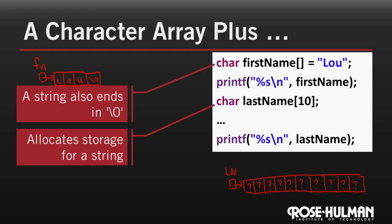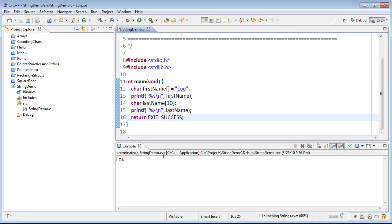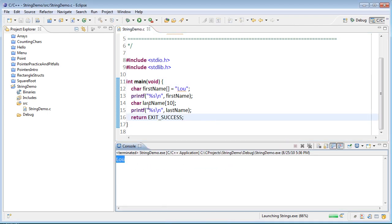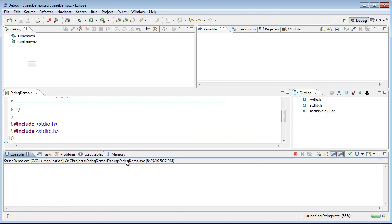Let's look at these in Eclipse. In Eclipse, we see the code from the slide. Let's run it. We see that it prints out Lou successfully, but not last name. Let's run it in the debugger to see why that is. So I'm hitting F11 to launch my debugger.